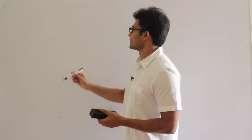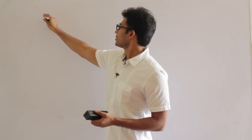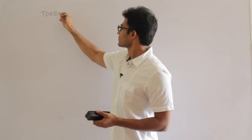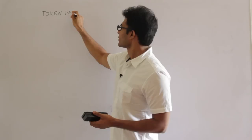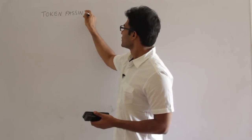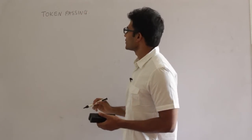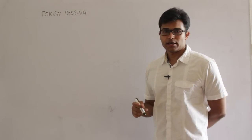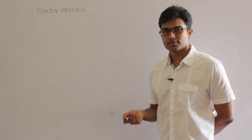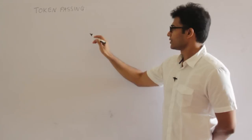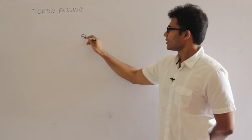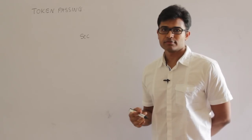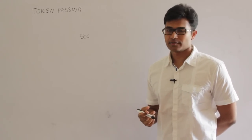The next access control method is token passing. Before going to token passing, I would like to give some basics. Till now we have been measuring time and delays in terms of seconds — propagation time and transmission time in milliseconds or microseconds.